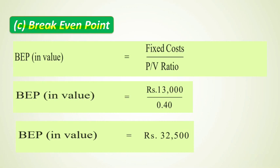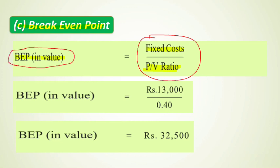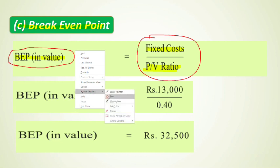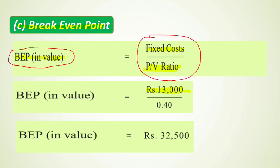Part C — Break-Even Point. The break-even point is the situation where there is no profit or no loss. The formula for break-even point value is: Fixed Cost divided by Profit Volume Ratio. So BEP = ₹13,000 divided by 0.40 = ₹32,500.